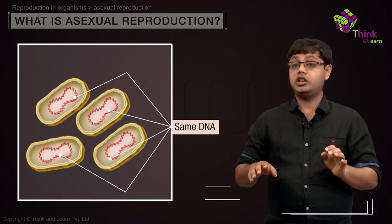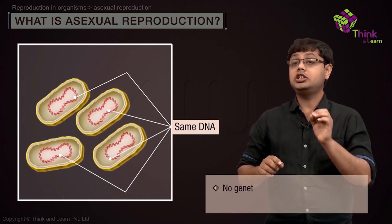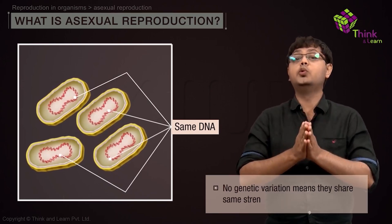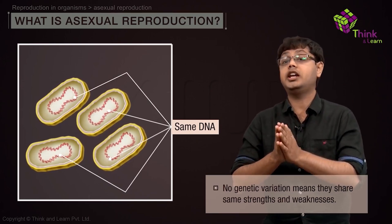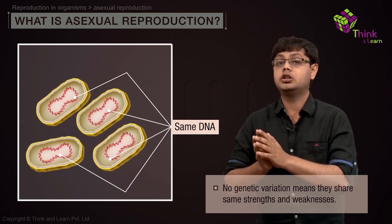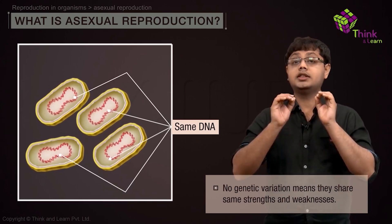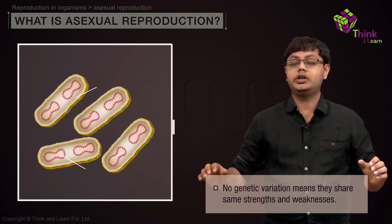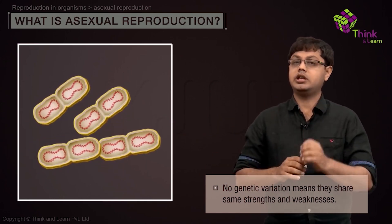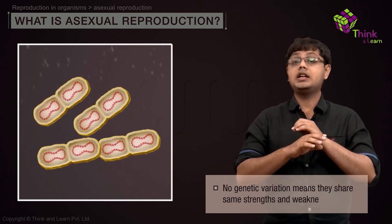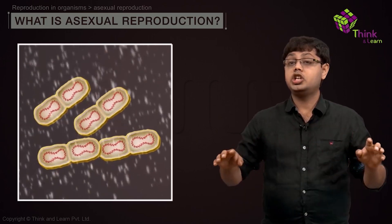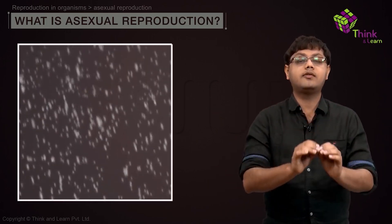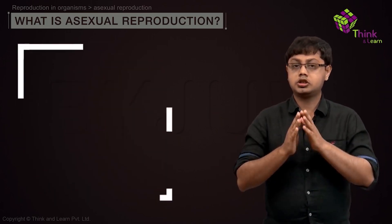Having no genetic variation essentially means there is no room for natural selection to act on it. That is, they share the same strengths and weaknesses. Therefore, the entire population would perish if a major environmental change occurred.